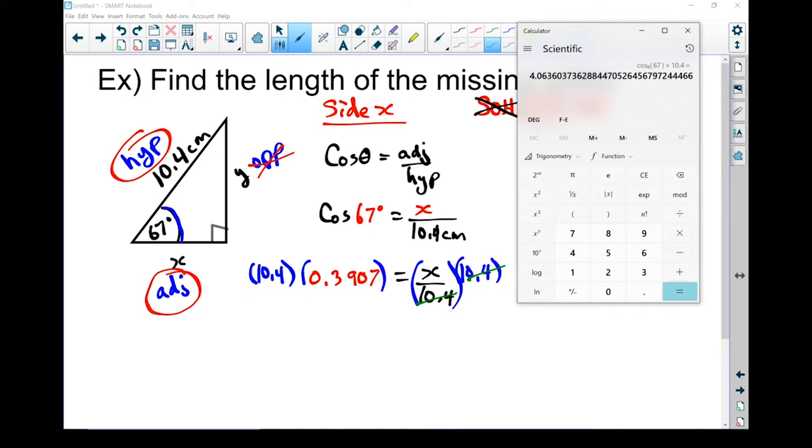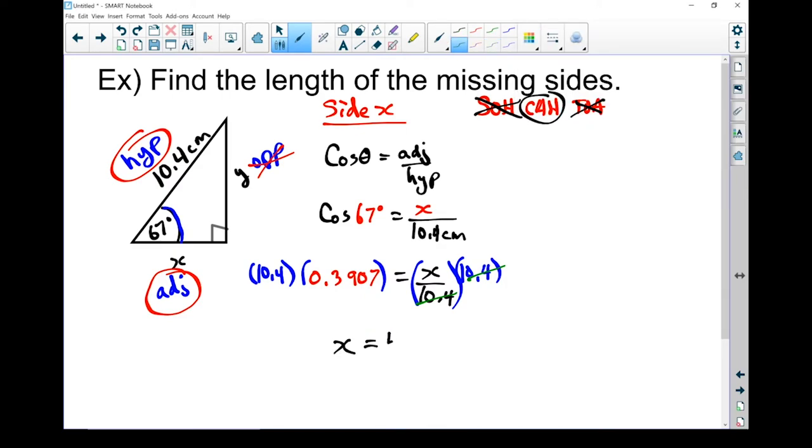There's my X. 4.0636. One decimal place is lots. I now have X equals 4.1. Put your units on. That is centimeters.